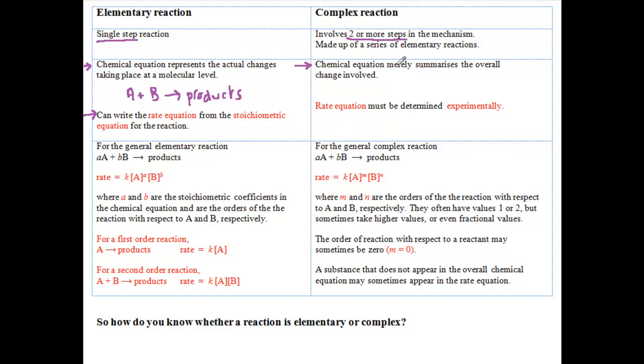In contrast, the chemical equation for a complex reaction merely summarizes the overall change involved. The rate equation must be determined from experiments to investigate how the rate of the reaction depends on the concentration of each of the substances involved in the reaction.